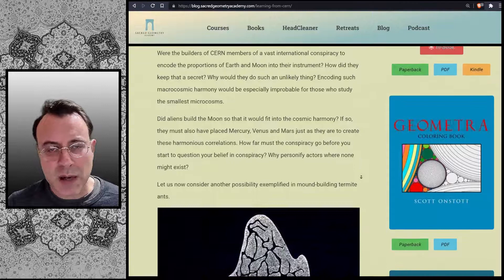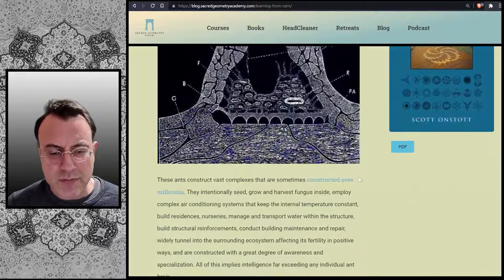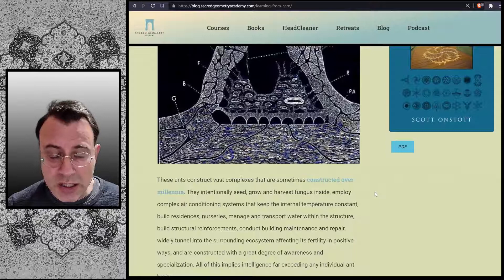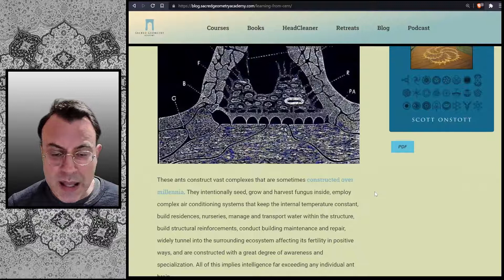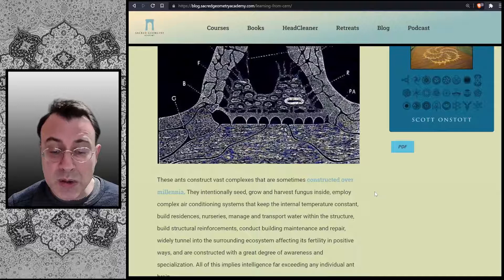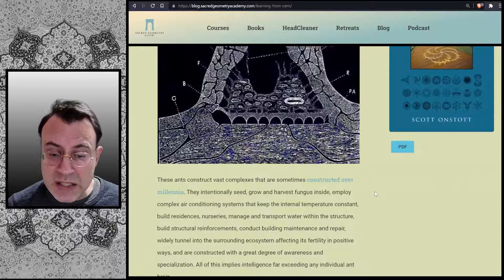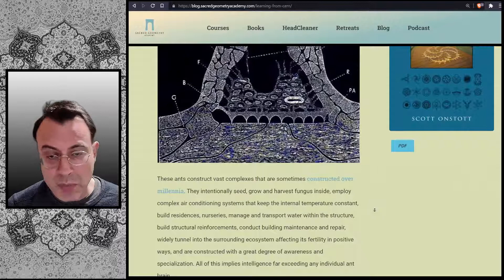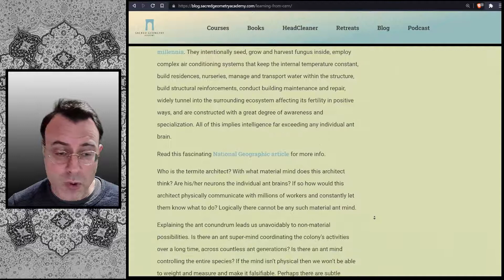Let us now consider another possibility exemplified in mound-building termite ants. These ants construct vast complexes that are sometimes constructed over millennia. They intentionally seed, grow and harvest fungus inside, employ complex air conditioning systems that keep the internal temperature constant, build residences, nurseries, manage and transport water within the structure, build structural reinforcements, conduct building maintenance and repair, widely tunnel into the surrounding ecosystem affecting its fertility in positive ways, and are constructed with a great degree of awareness and specialization. All of this implies intelligence far exceeding any individual ant brain.